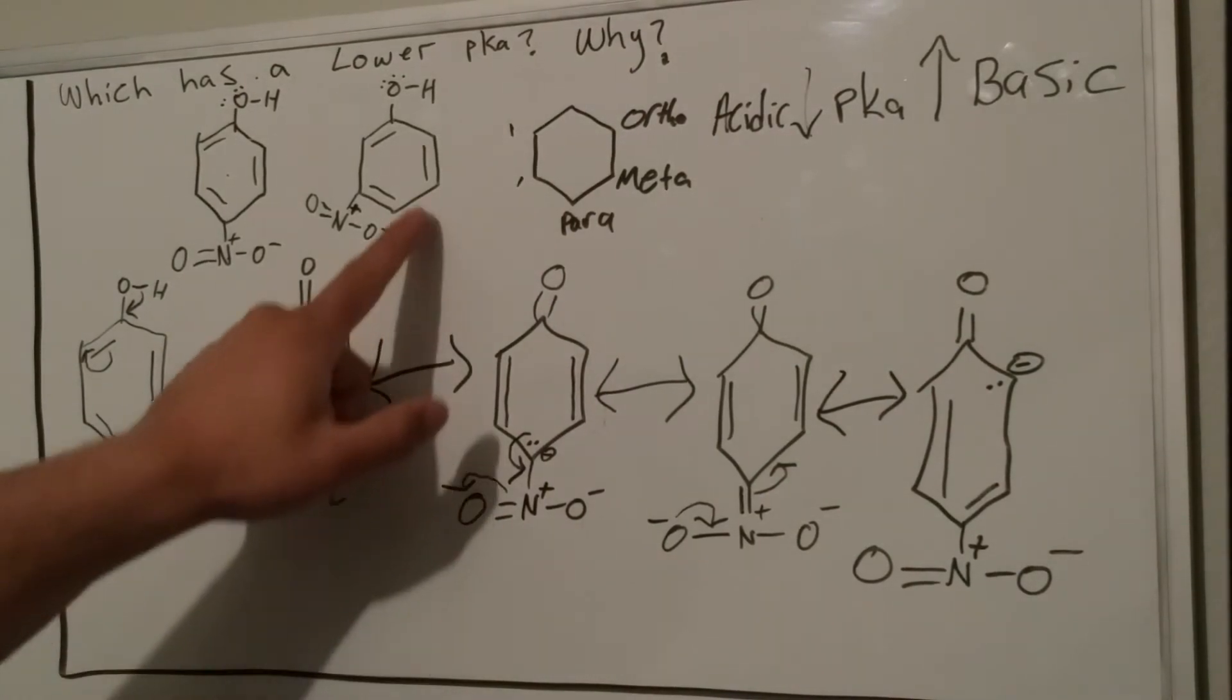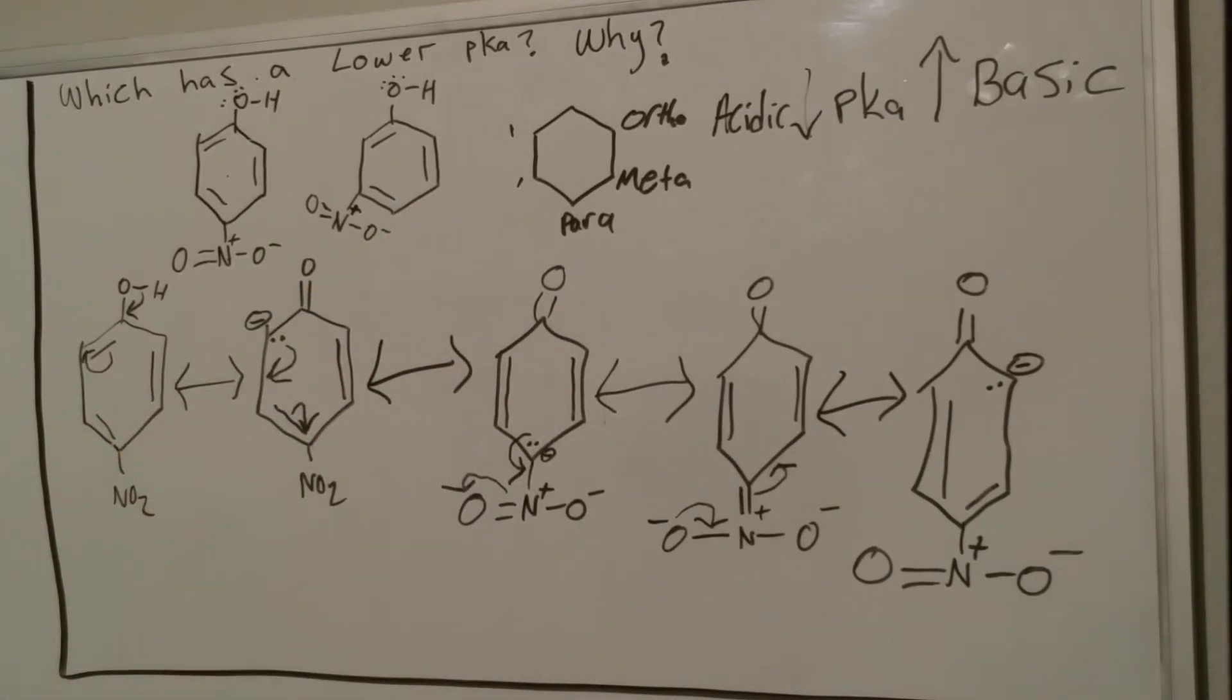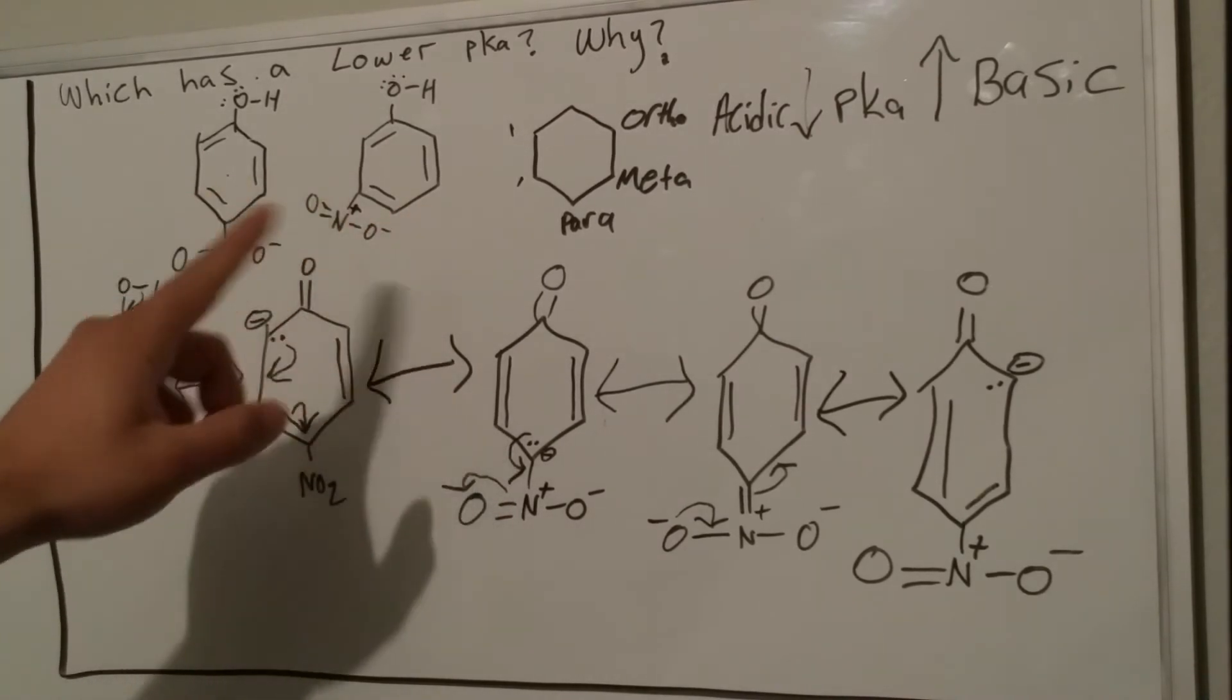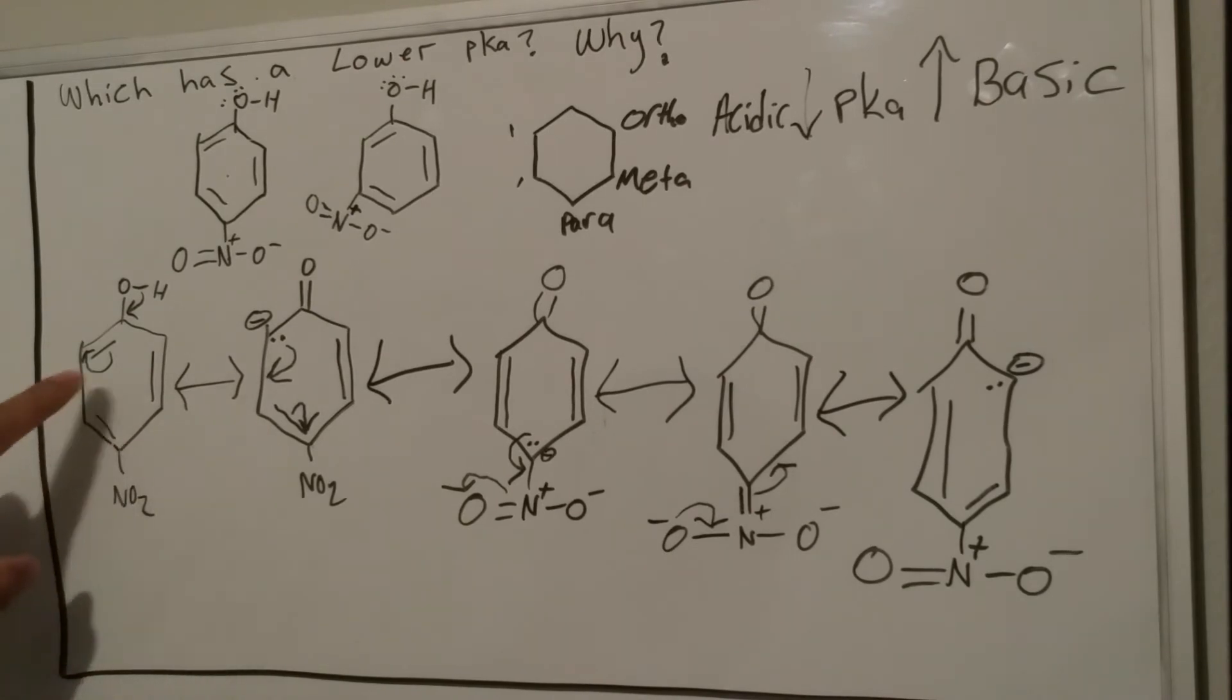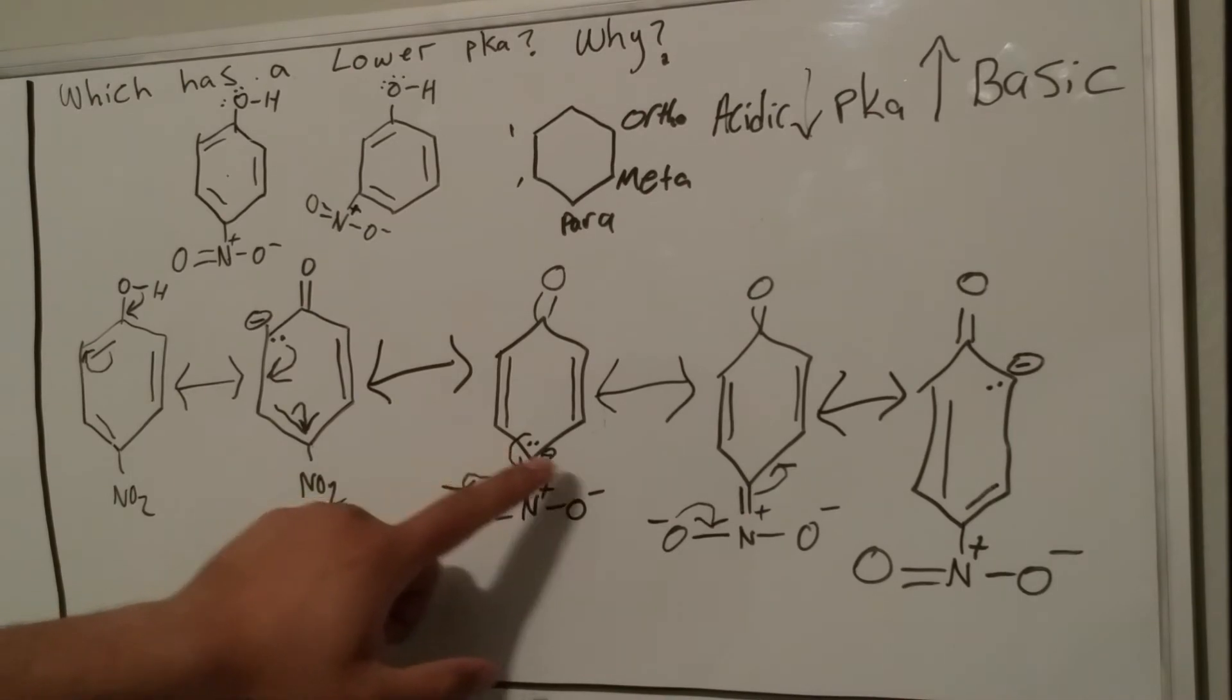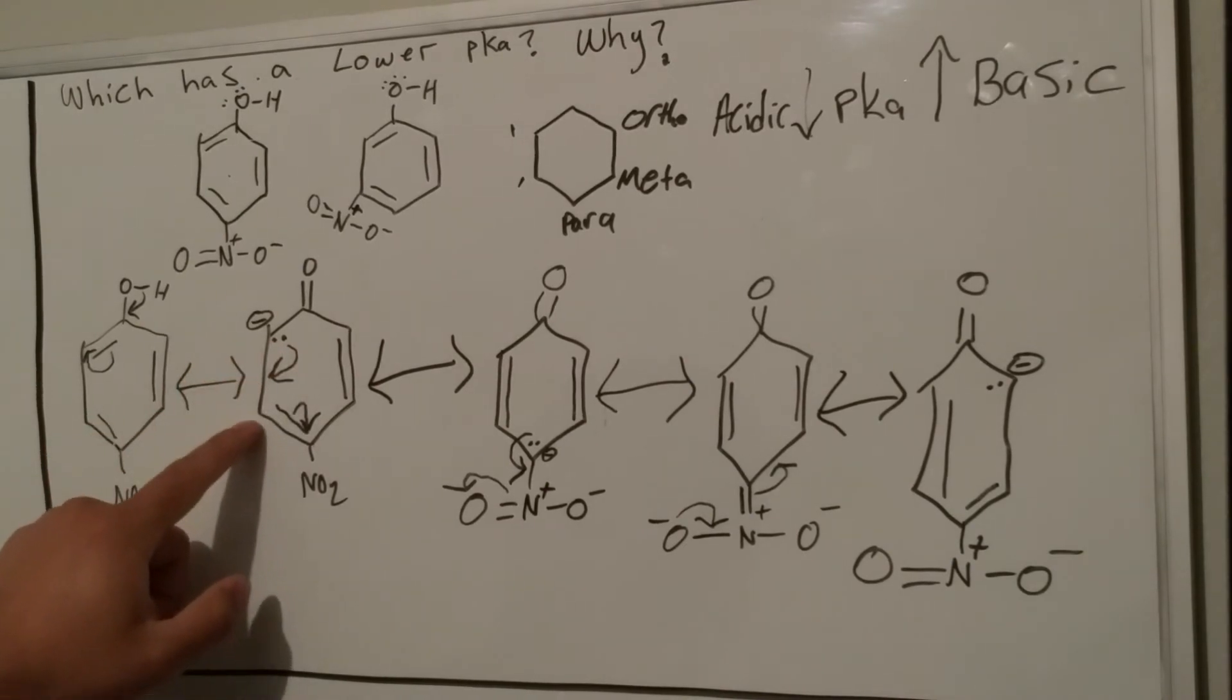Without having to draw resonance structures for the meta position, I'll explain why. Pretend NO2 was at the meta position here as in the other structure you need to compare with. As you see here, the lone pairs do not end up on a meta position. They go from the double bond to lone pair on the ortho, then lone pair on the para, and then lone pair on the ortho again. The lone pair did not go on the metas.